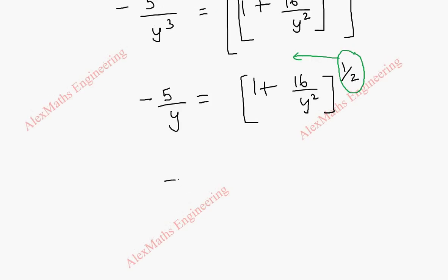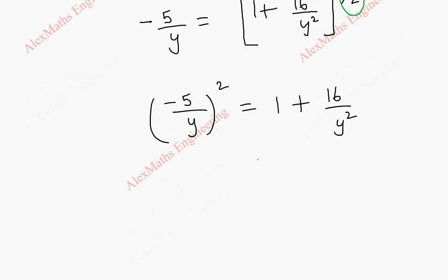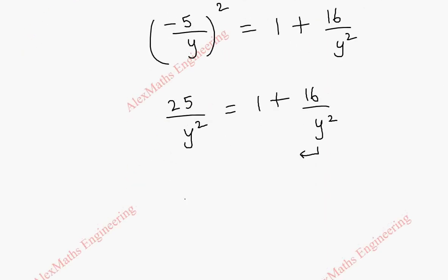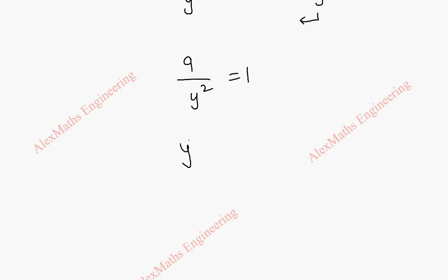Taking the power 1/2 to the other side turns it into a square: (minus 5 by y)² equals 1 plus 16 by y squared. So 25 by y squared equals 1 plus 16 by y squared. Moving terms gives 25 minus 16 equals 9, so 9 by y squared equals 1, meaning y squared equals 9, and y equals plus or minus 3.